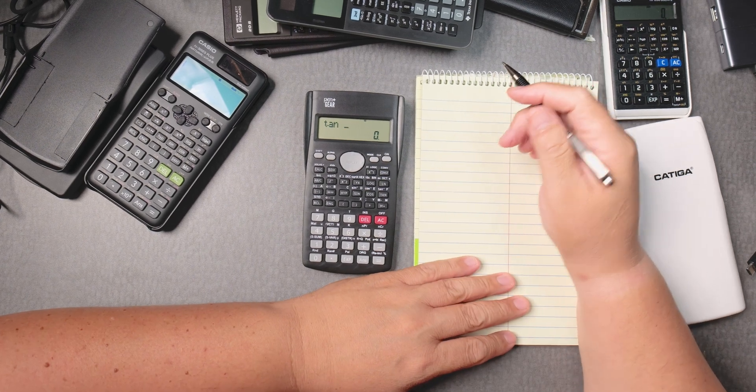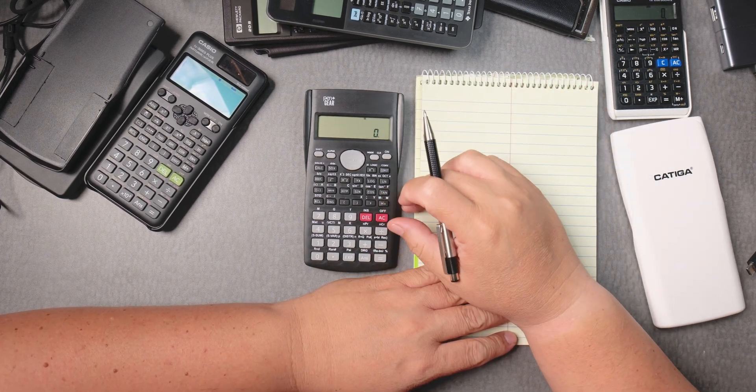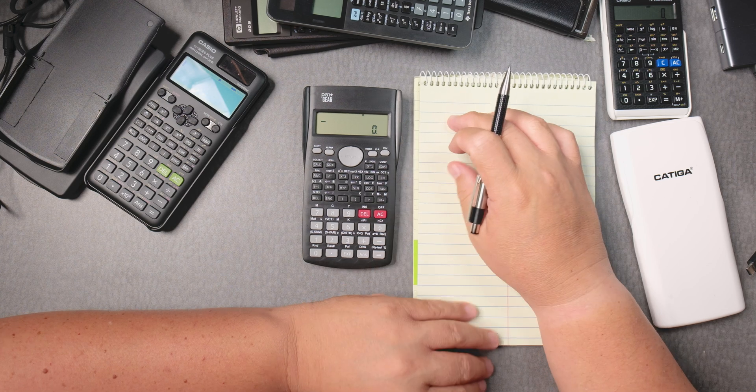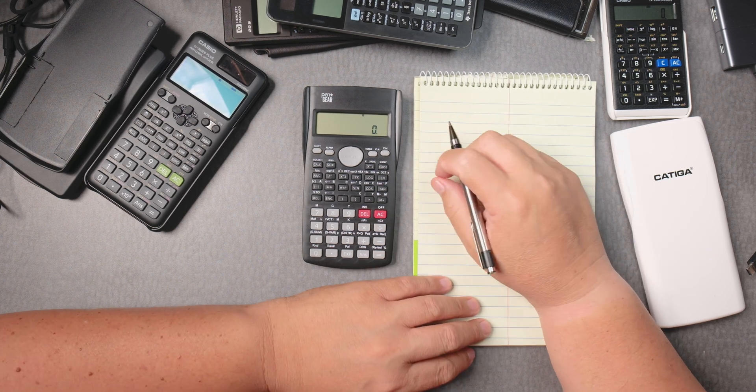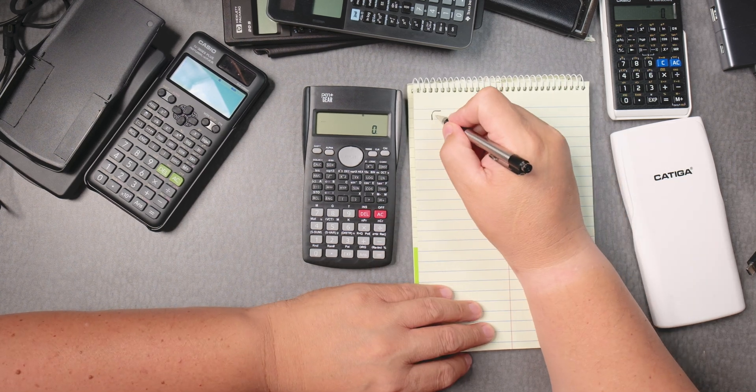Okay, let's do square roots on the Pen Plus Gear calculator. Usually you find them in Walmart. All right, square root of 25.